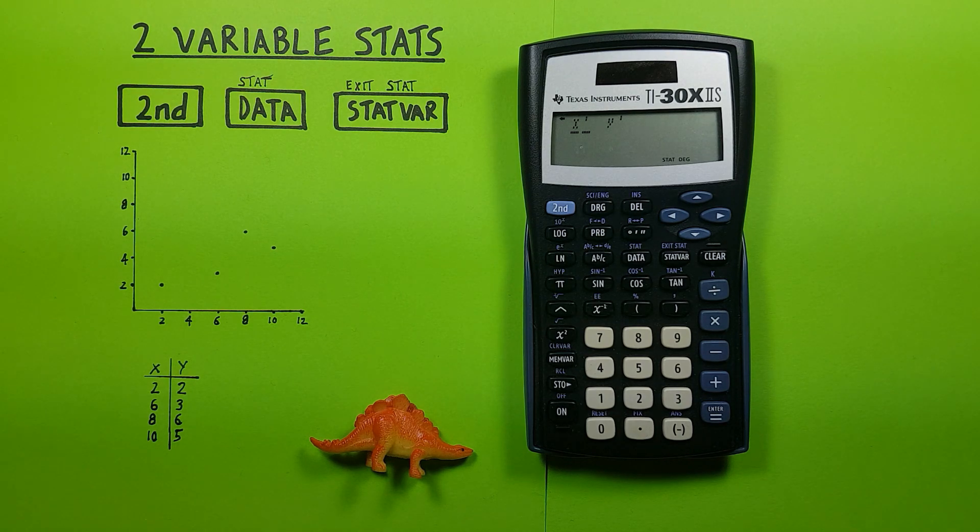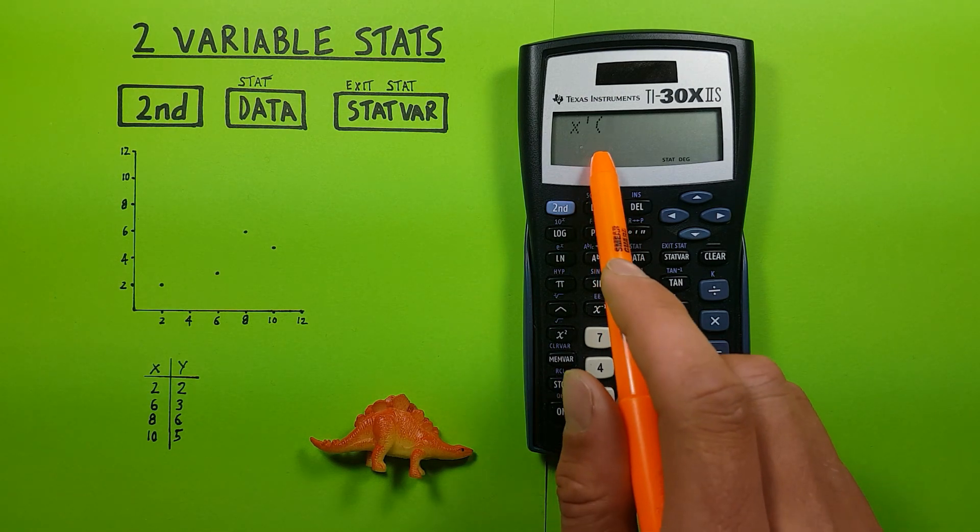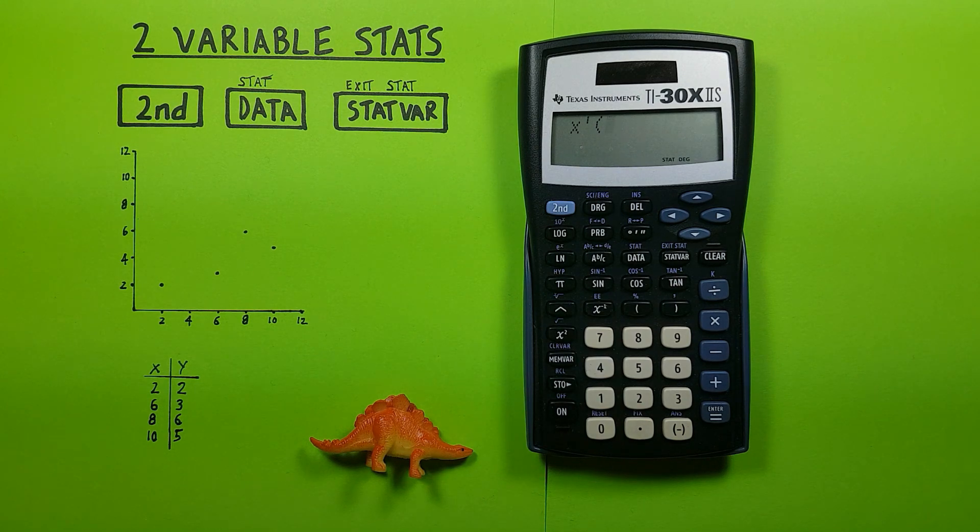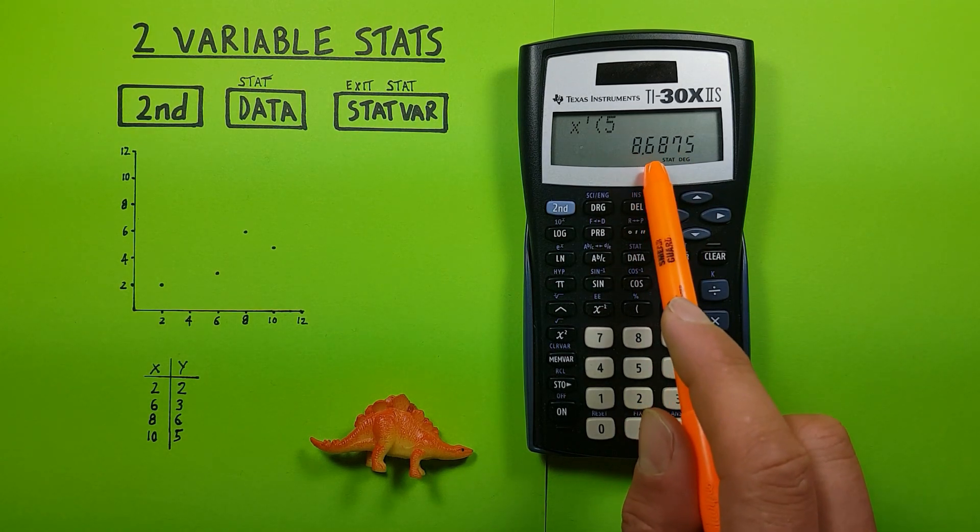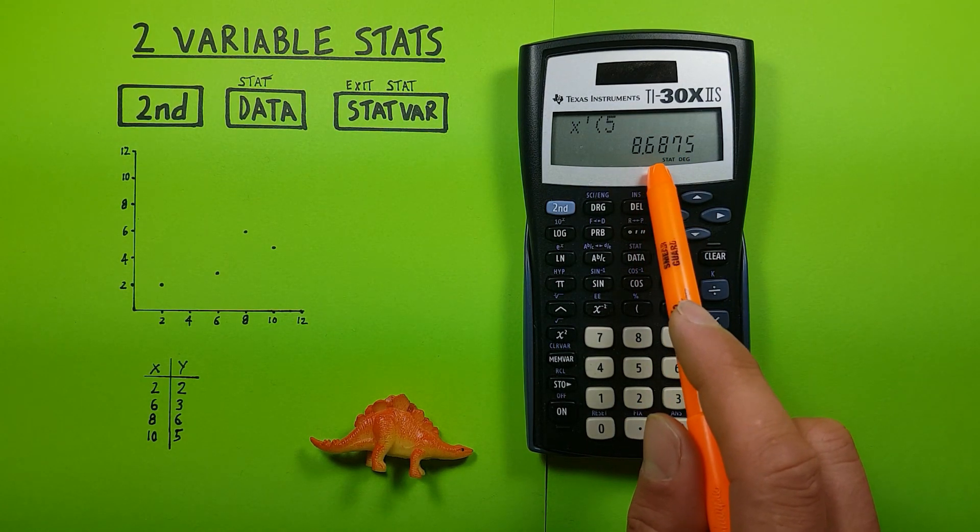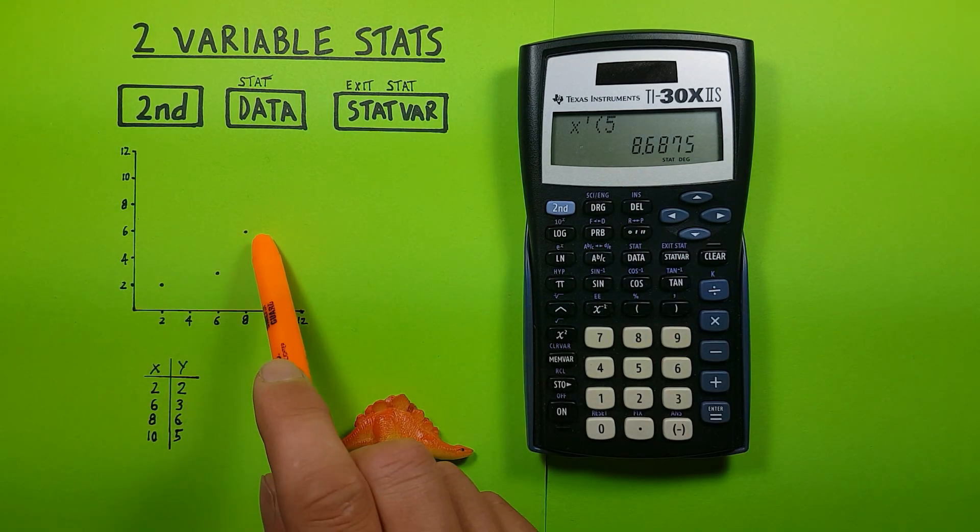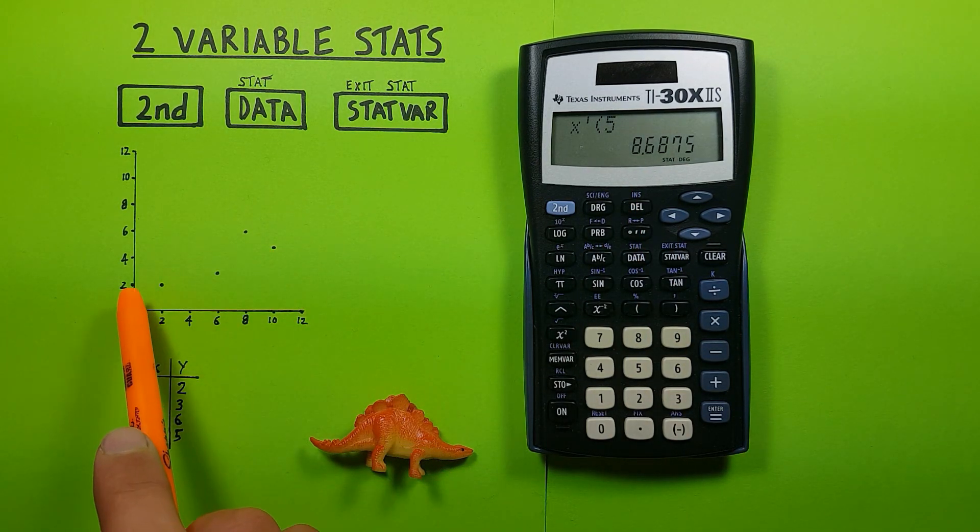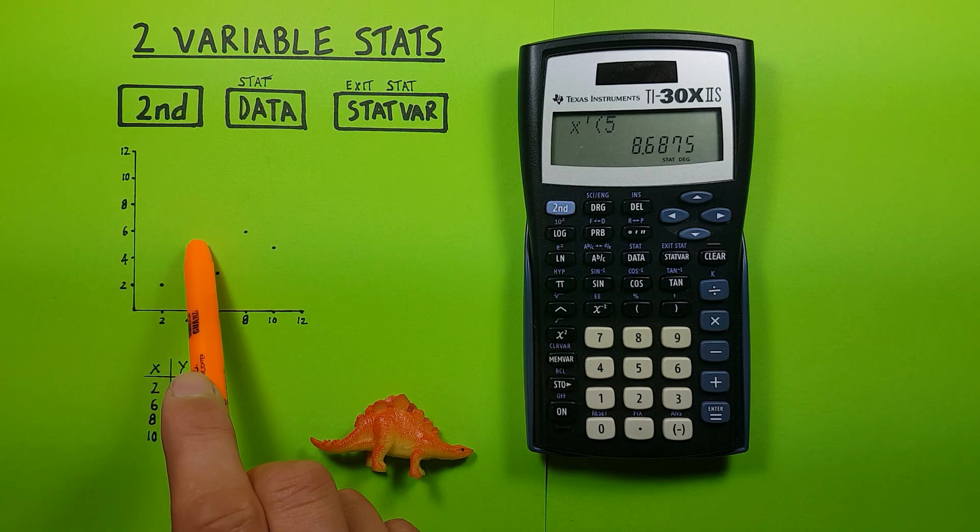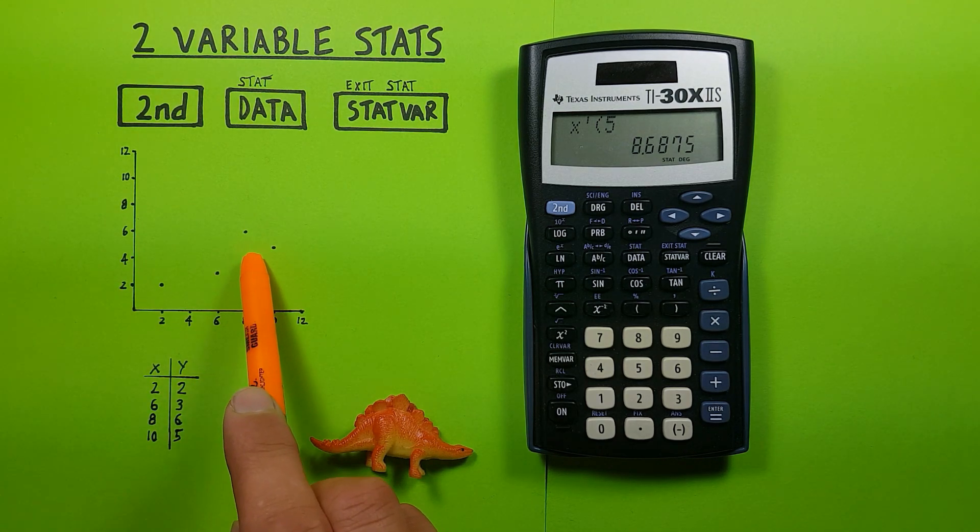So if we press enter and enter a y of let's say five and then press enter, we see that gives us an x value of 8.68, which makes sense because we can see we have a line going kind of like this. If we had a y of five and bring it across to where the line sort of is, that's about eight and a half, nine right there. That makes sense.